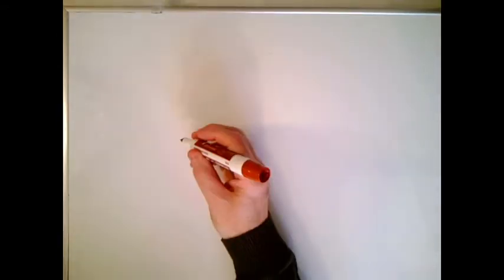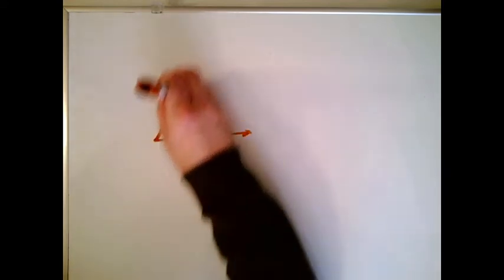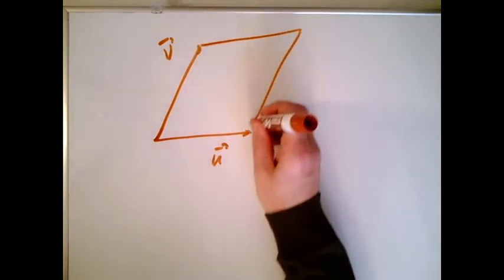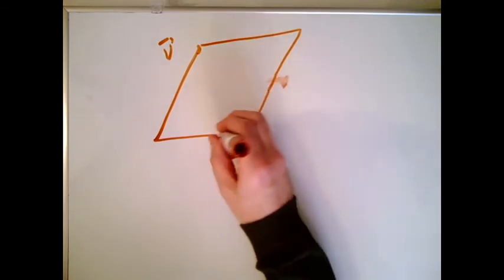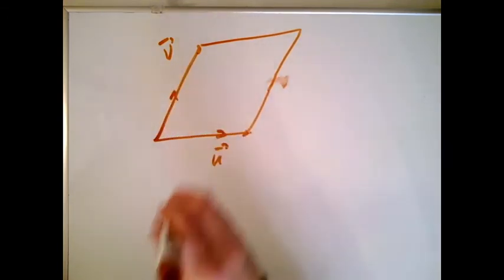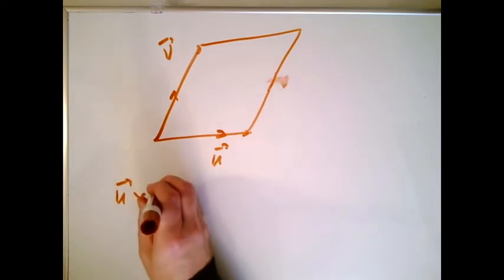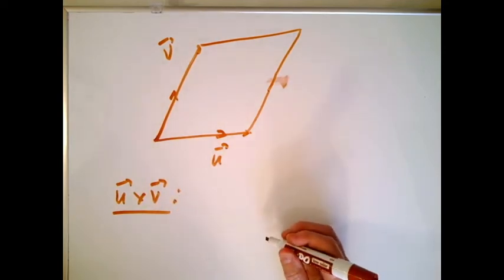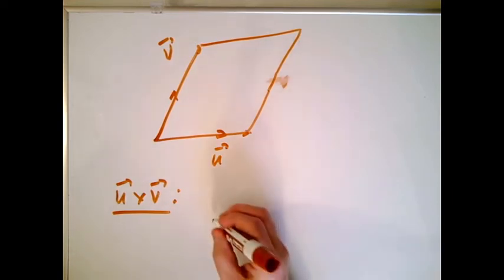Let's just flatten the whole picture. We have a vector u, we have a vector v, and a little parallelogram that they both form. What they want is a vector — they're going to call it the cross product. In order to describe a vector, you need to say two things: how long it is, and what direction it points.